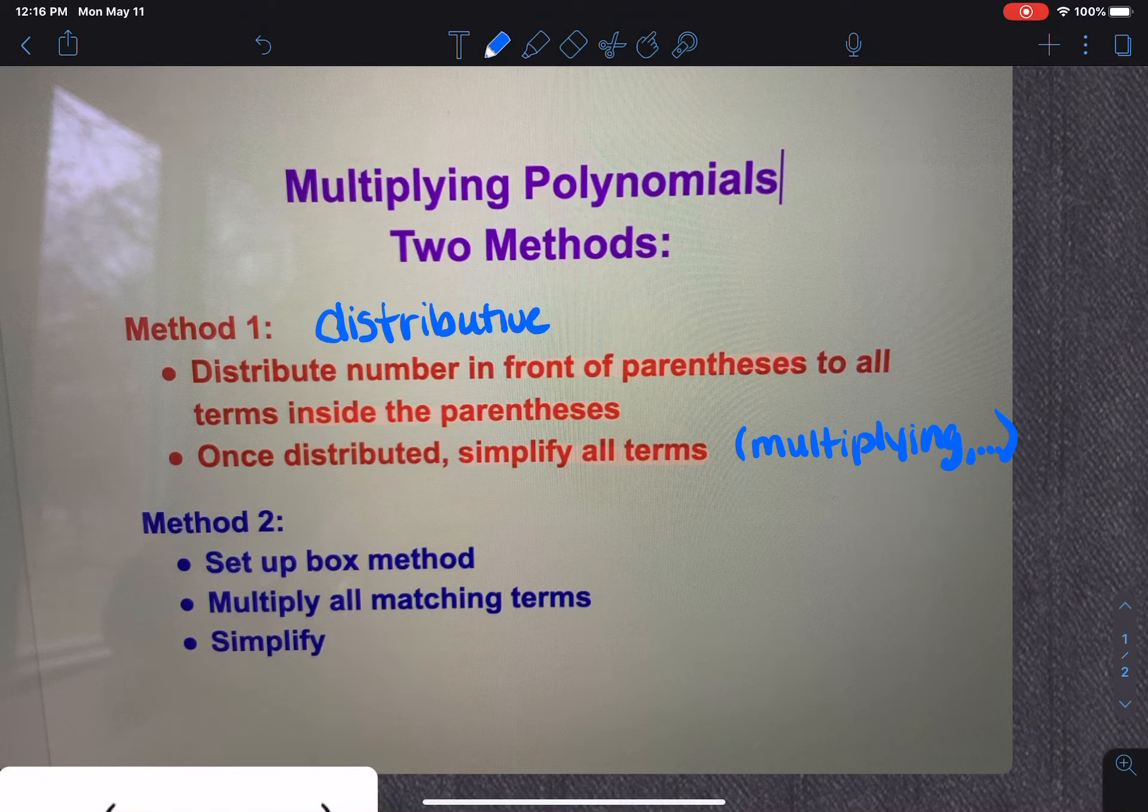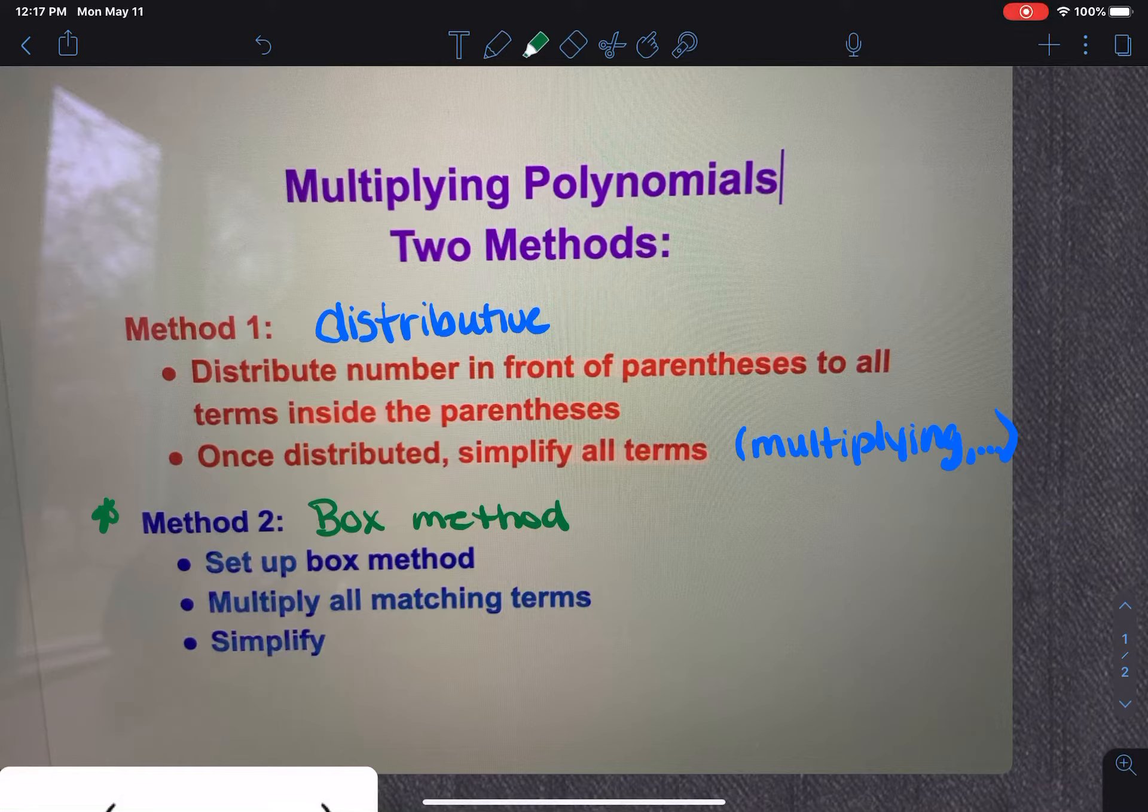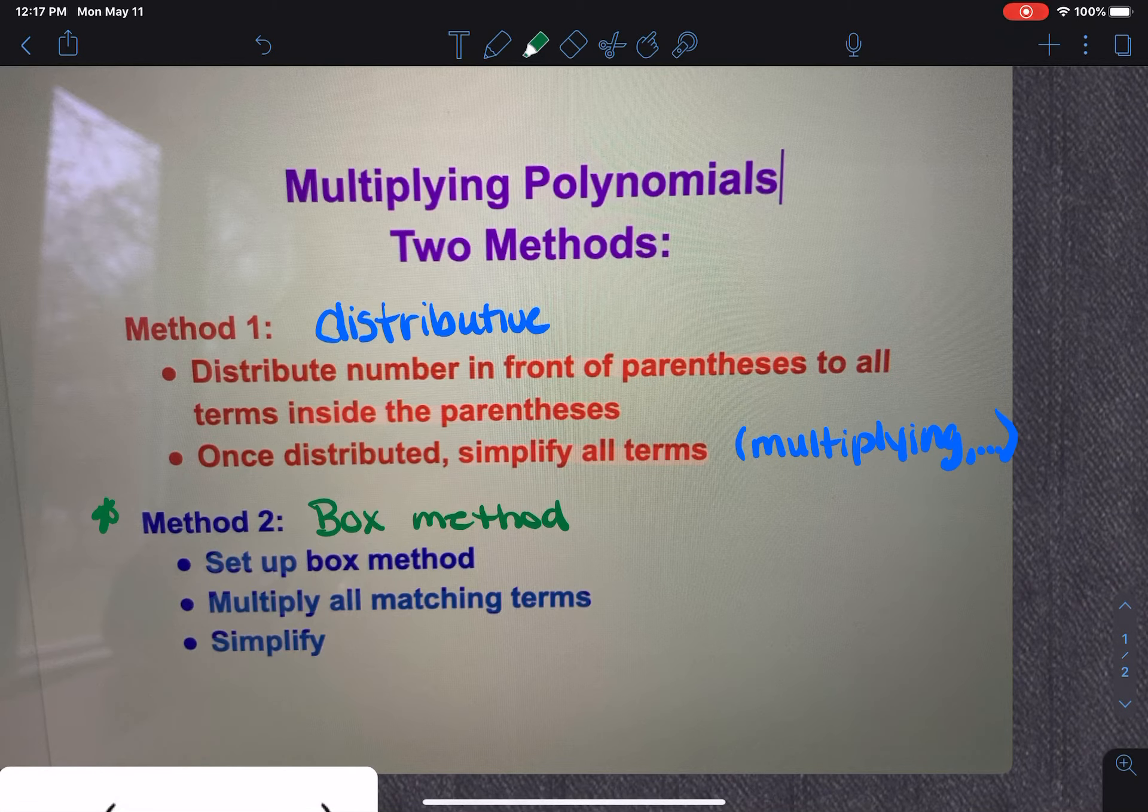Now, the second method I primarily refer to as the box method. And I will tell you, most kids when we do this may start out with distributive, but I'd say by the time we get to the end, maybe 95% of them are doing the box method because the box method just seems easier to them. So to do the box method, we have to set it up, multiply all our matching terms, and then we need to simplify. So really, some of the methods are very similar because when we talk about simplifying up here, we also have to simplify down here. So there are some things that are alike.